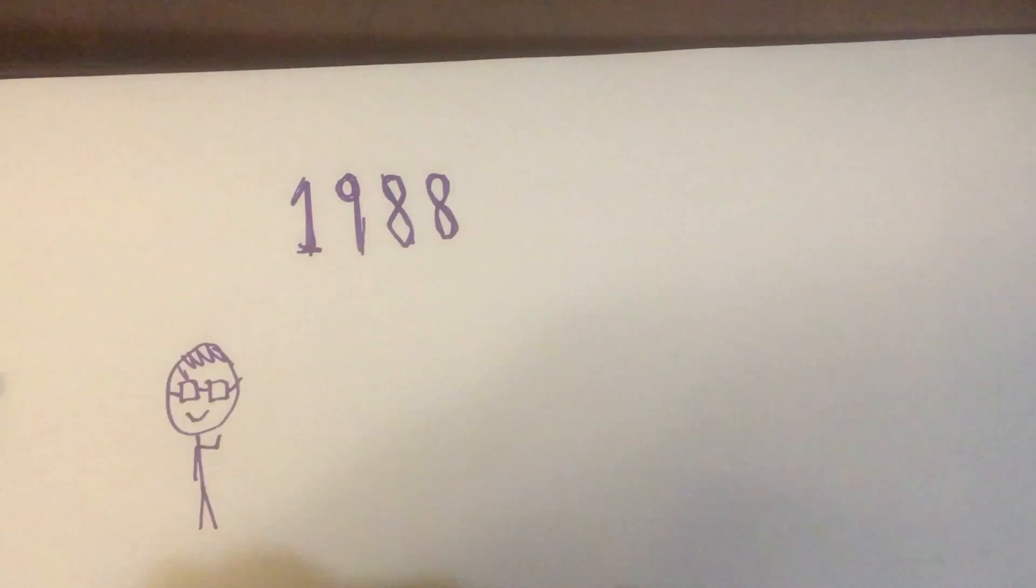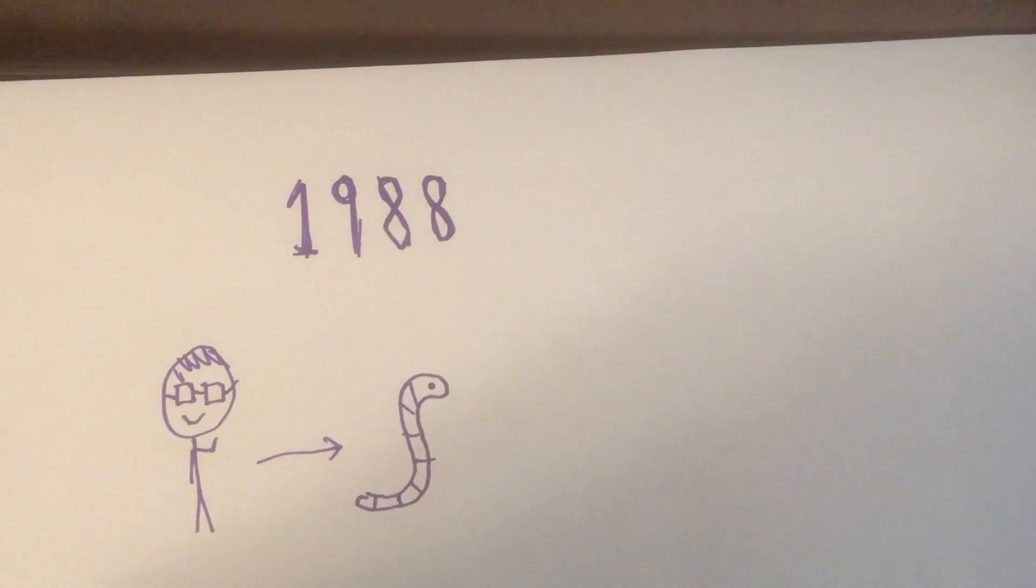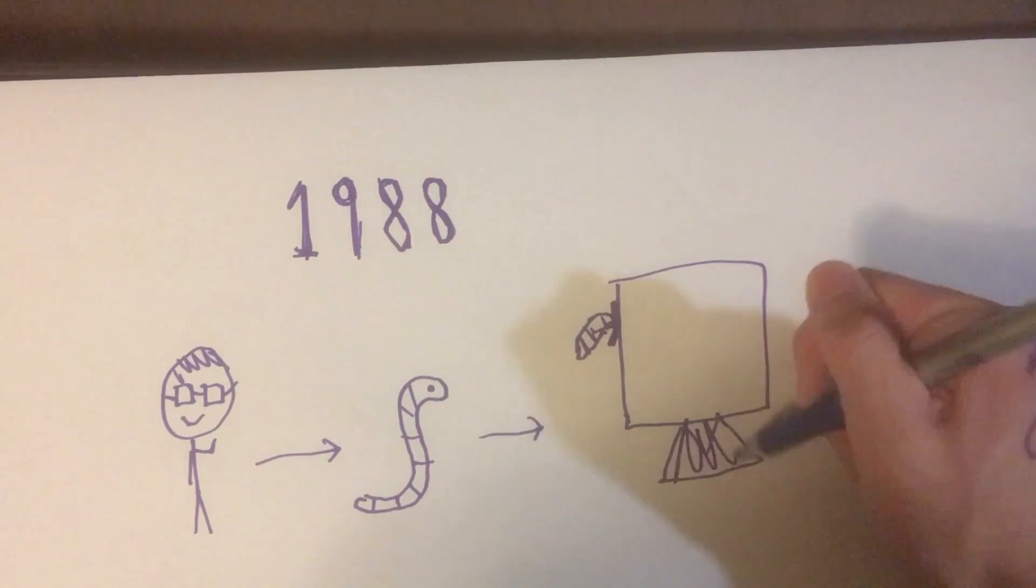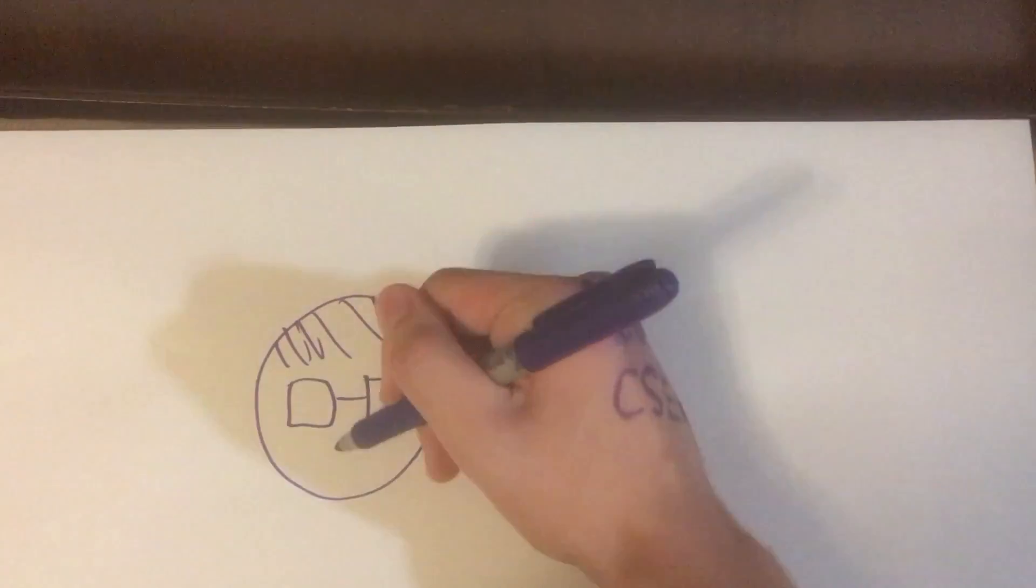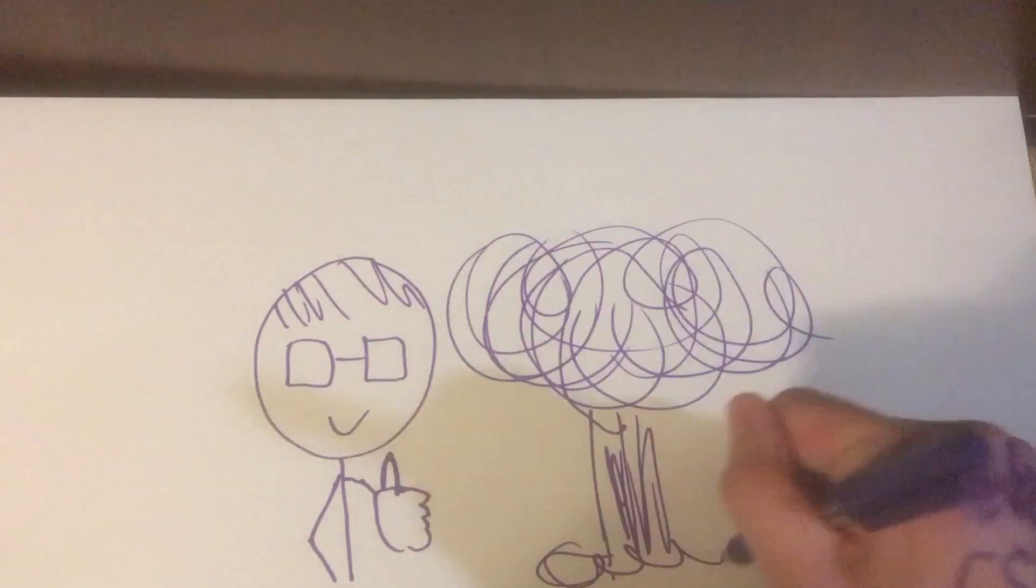In 1988, there was this guy named Robert Morris, who created this thing called the Morris Worm, which would exploit vulnerabilities in certain software to spread copies of itself from computer to computer. He intended for it to be harmless, but there were some unfortunate side effects.